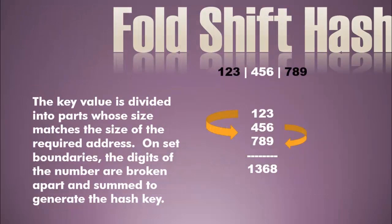Fold shift is again a mechanical-slash-mathematical algorithm. We take a number — say 123456789 as the whole number — then we break it apart, stacking one portion above another, adding those numbers up together, and that gives us a hash key of 1368. Again, if that's bigger than the table, we would mod it by the table size.